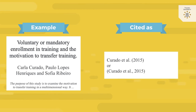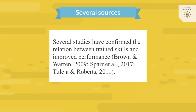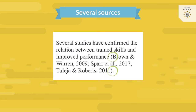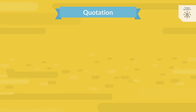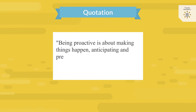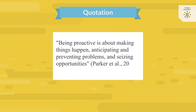If you want to use more sources to support your text, you can put them all between the same brackets, separated by a semicolon. Please make sure the sources between the brackets are in alphabetical order. If you copy a piece of text word for word, for example if you want to quote a definition for one of your variables, you put the text between double quotation marks and add a page number to the in-text citation.